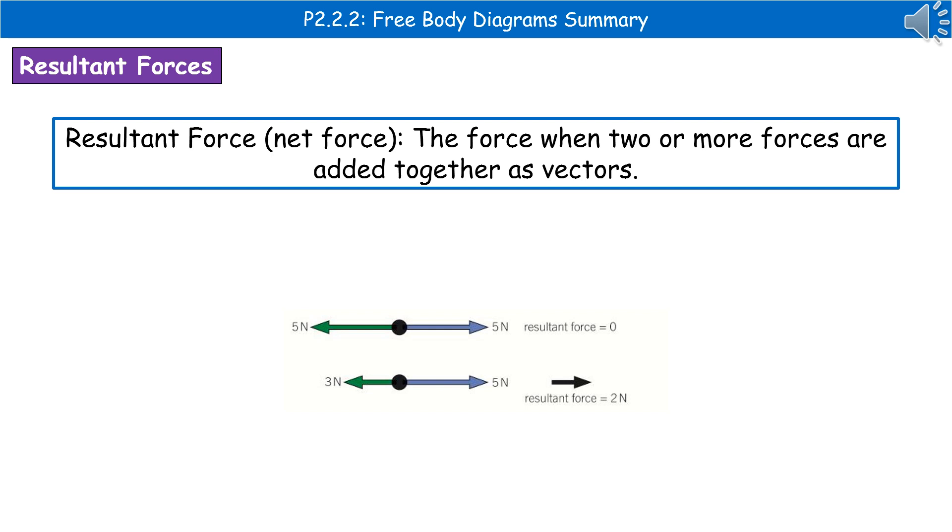I've given you an example at the bottom there. The first one we can see is five newtons acting towards the left, five newtons in the opposite direction. So when we add those together as vectors, remember one would have a positive sign, the other would be negative. Therefore, the resultant force is zero because they cancel out.